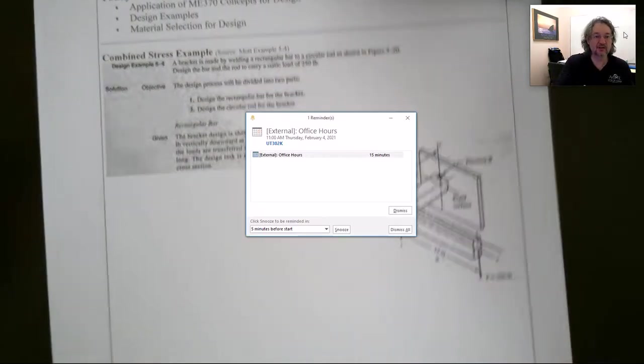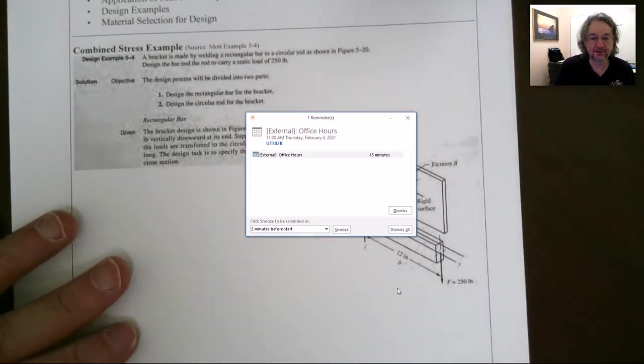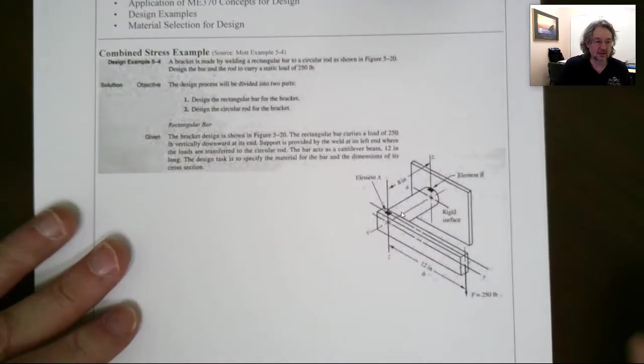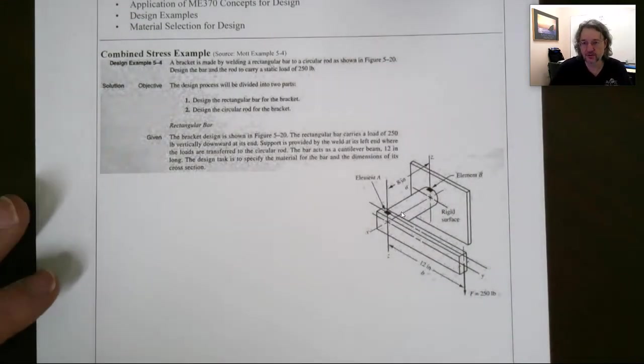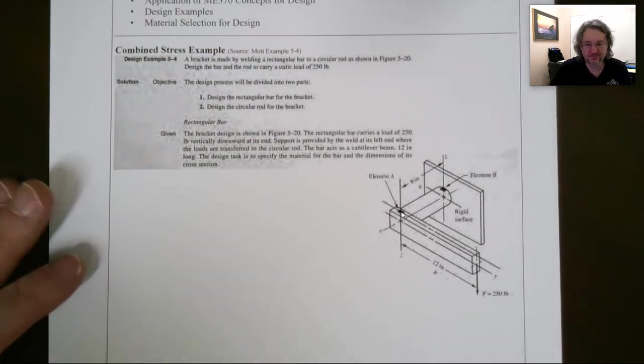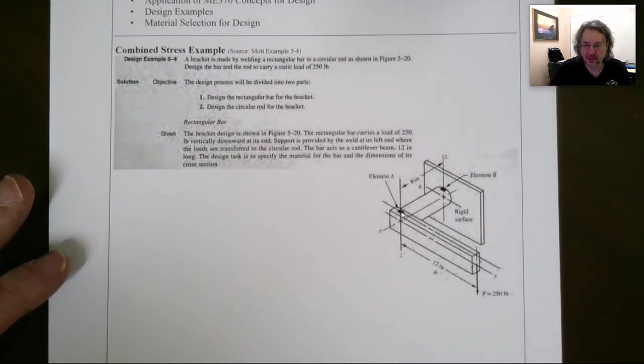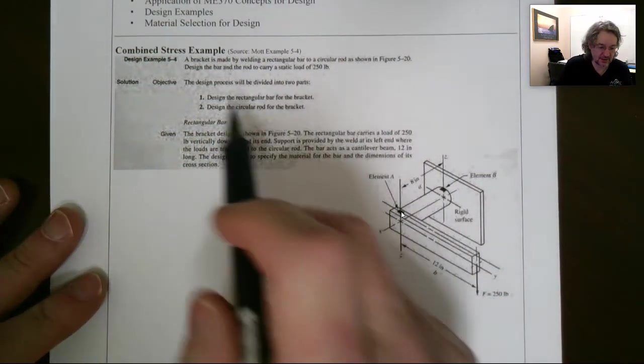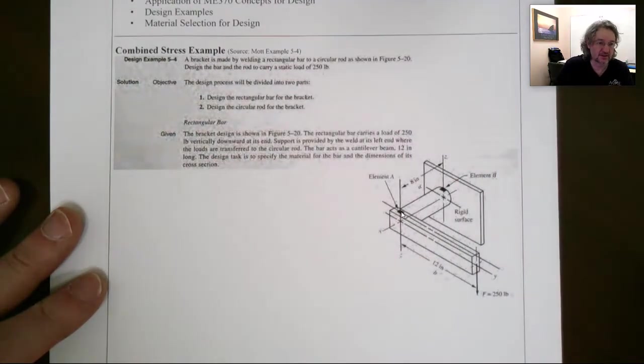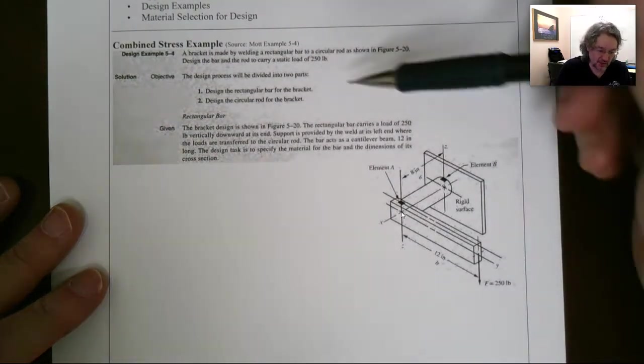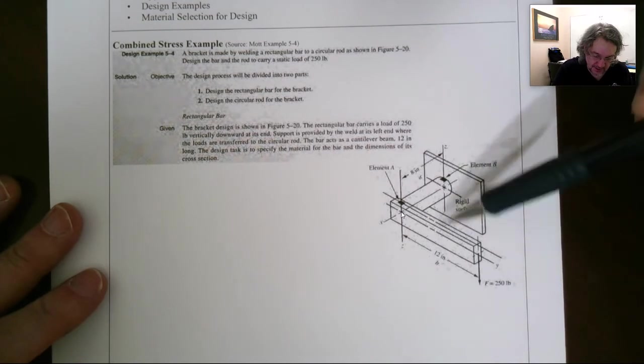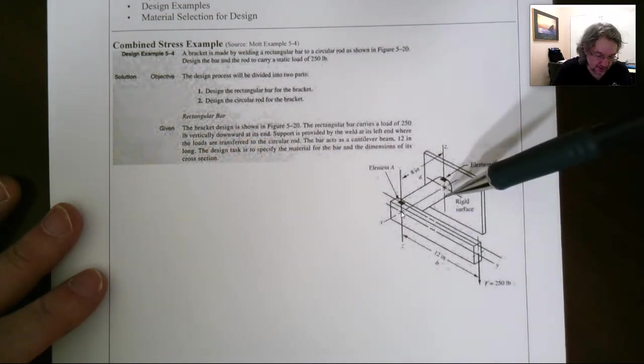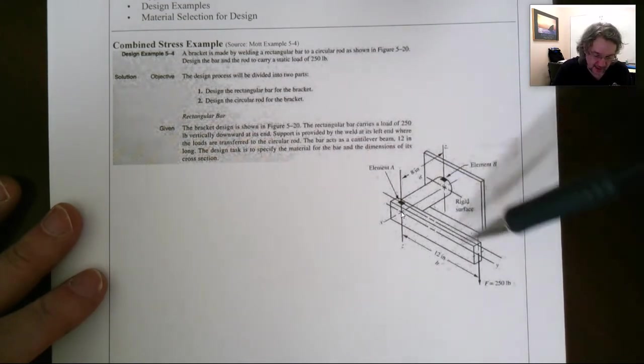They do it differently than I do. Okay, let's dismiss the office hours. We're going to use closer to ME 370 Chapter 5 stuff. So this is a static combined stress problem here, where we want to design both the rectangle and the circular part of this bracket right here.